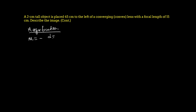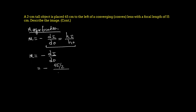The magnification is given as m = −di / do, or equivalently hi / ho. So m = −di / do = −(45/2) / 45 = −1/2. The negative sign means the image is inverted, and the magnitude of one-half means the image is half its original height.